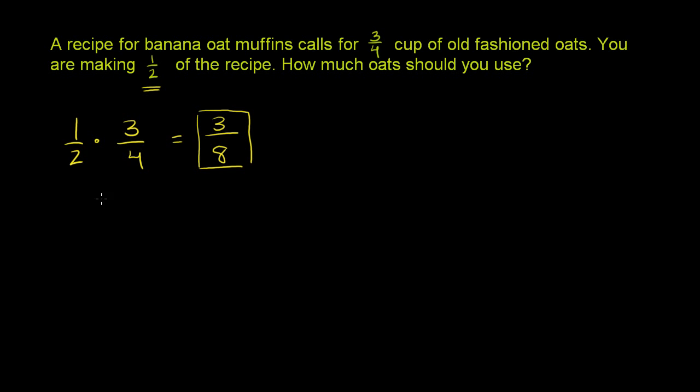And let's visualize that a little bit, just so it makes a little bit more sense. Let me draw what 3/4 looks like, or essentially how much oats you would need in a normal situation, if you're doing the whole recipe. So let me draw—let's say this represents a whole cup. And if we put it into fourths, let me divide it a little bit better. So if we put it into fourths, 3/4 would represent 3 of these, so it would represent 1, 2, 3. It would represent that many oats.